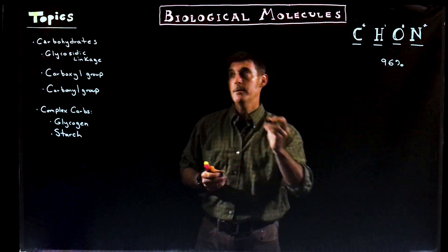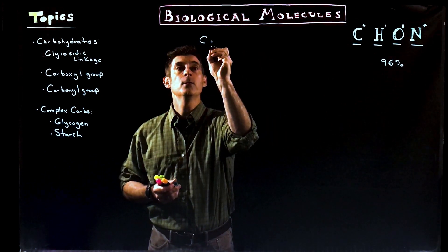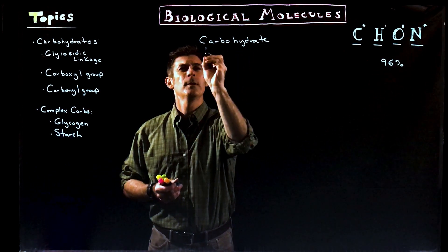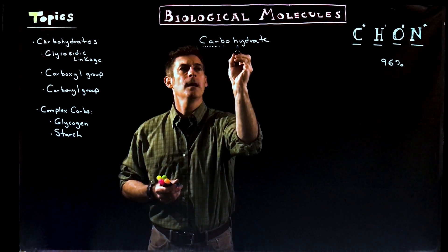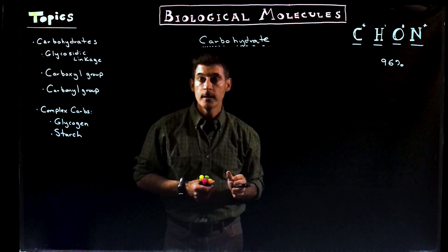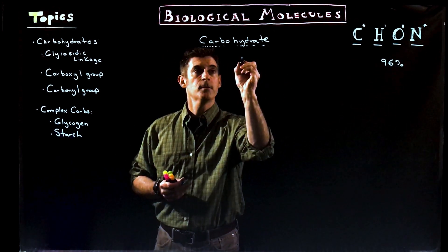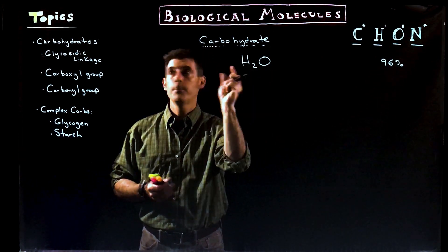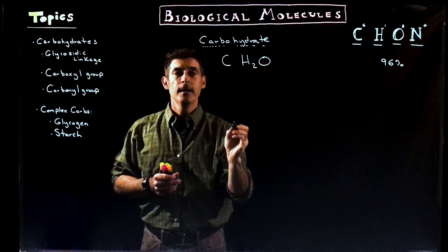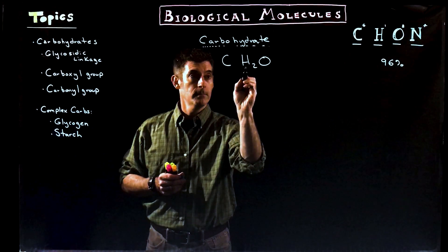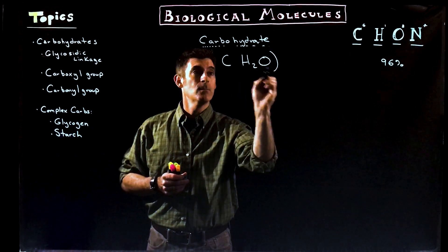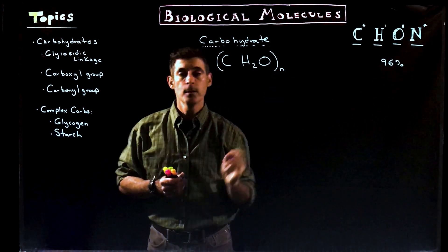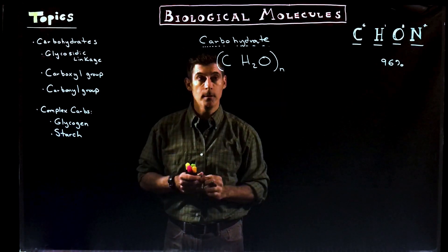Starting off with carbohydrates. The word alone — carbohydrate. Breaking it down: "hydrate" — you think of water, H₂O. And then carbon. So carbohydrate is carbon plus water. What we're going to find is that one carbon, two hydrogens, one oxygen — that is the formula for a carbohydrate: CH₂O. And I'm going to put an N outside here — if you're not familiar with that notation, that's some number, that could be any number.